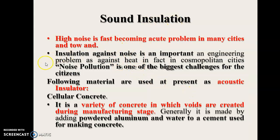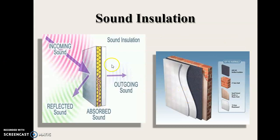The third type is sound insulation. High noise is fast becoming an acute problem in many cities, and insulation against noise is an important engineering problem — we always talk about noise pollution. One of the best examples of a sound insulator is cellular concrete, a variety of concrete in which voids are created during the manufacturing stage, just like hollow blocks. Incoming sound gets reflected or absorbed. Even on roads, plants are grown to absorb noise from horns, and sometimes they also absorb light — that is why we grow plants at the median.